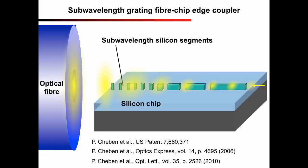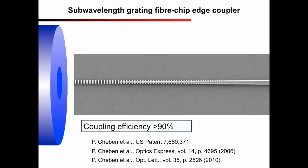This causes a gradual expansion of mode size along the coupler towards the chip edge until a spot size is reached which is similar to the optical fiber mode. The coupler's length is about 50 microns, here we see it under an electron microscope.